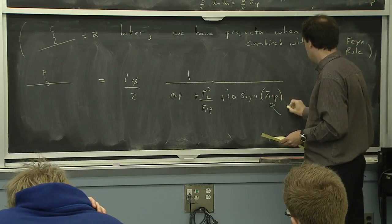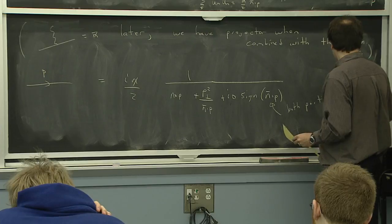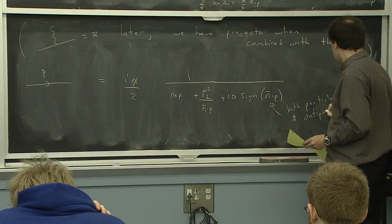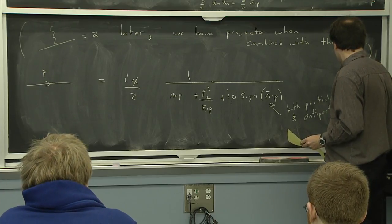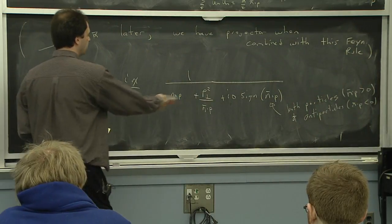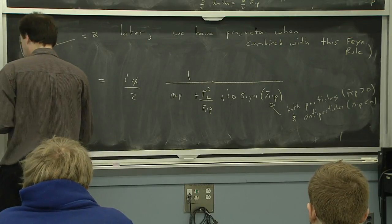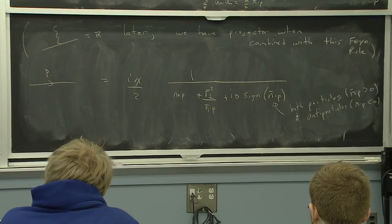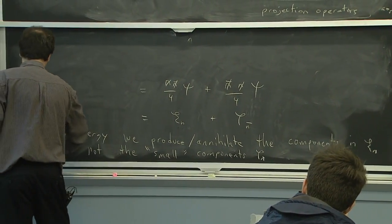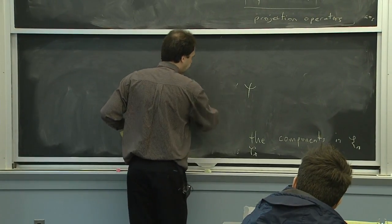If it was just +i0 as in HQET, we'd only have particles. Here it could be either sign — we have both particles and antiparticles — as we saw when we were doing the spinors. If we wanted to think about particles and antiparticles separately, we could have a definite sign for the i0s, but for the combined propagator we write it this way.